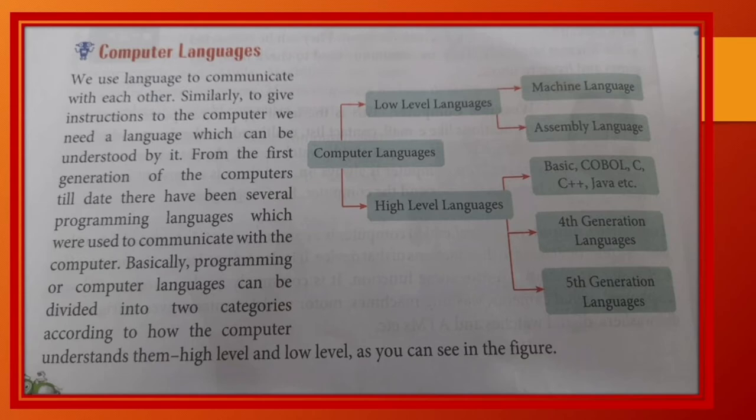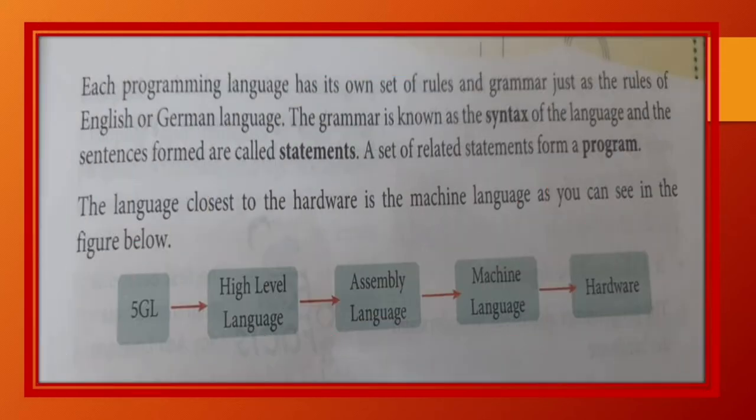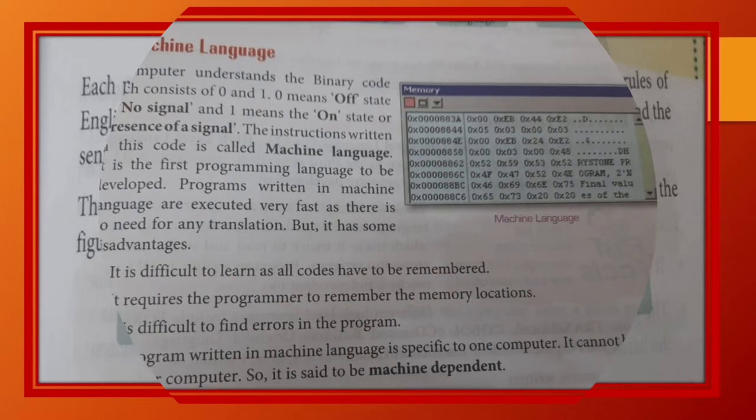From the first generation of the computers till date, there have been several programming languages which were used to communicate with the computer. Basically, programming or computer languages can be divided into two categories according to how the computers understand them, high level and low level. As you can see in figure, each programming language has its own set of rules and grammar, just as the rules of English or German language. The grammar is known as the syntax of the language and the sentences formed are called statements. A set of related statements form a program. Means, har language ko use karne ke liye kuch grammatical rules hote hain. Aur in rules ko syntax kahte hain. Aur sentences ko statement. Aur in statement se program bana jate hain.